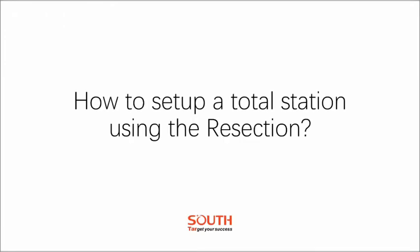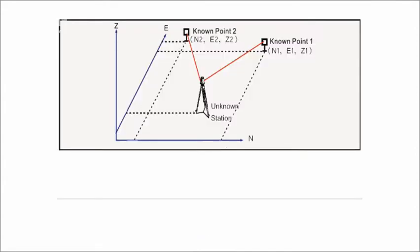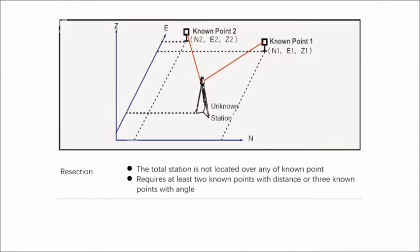This video will give an overview of how to set up a total station using resection method. When the total station is not located over any of known point, resection helps to define the coordinate of station from measurements. It requires at least two backside points with distance or three backside points with angle.